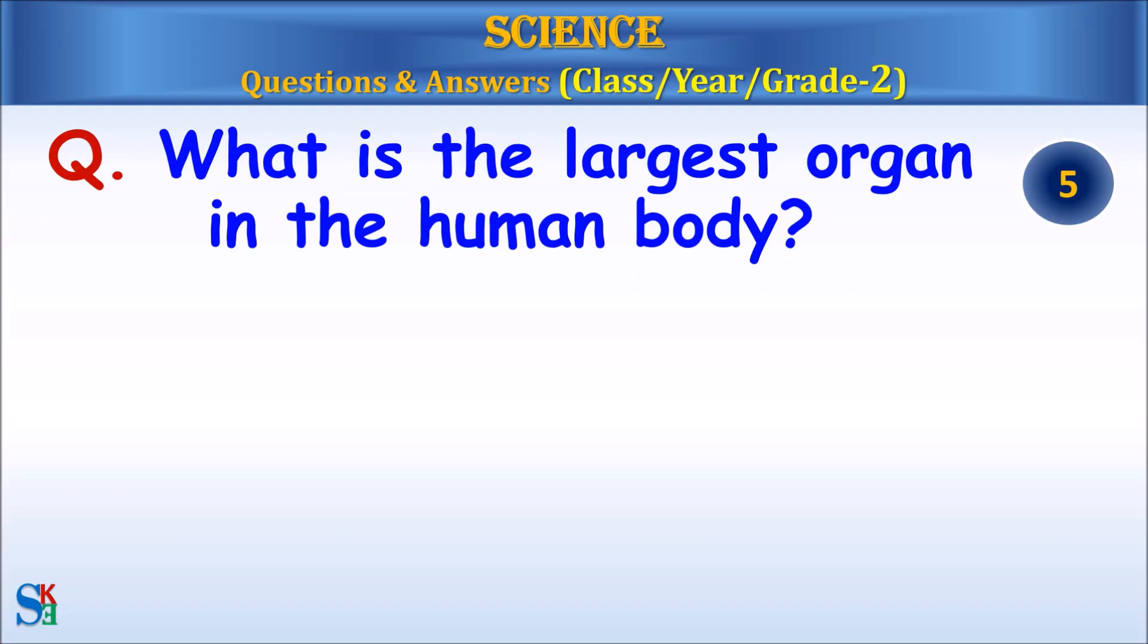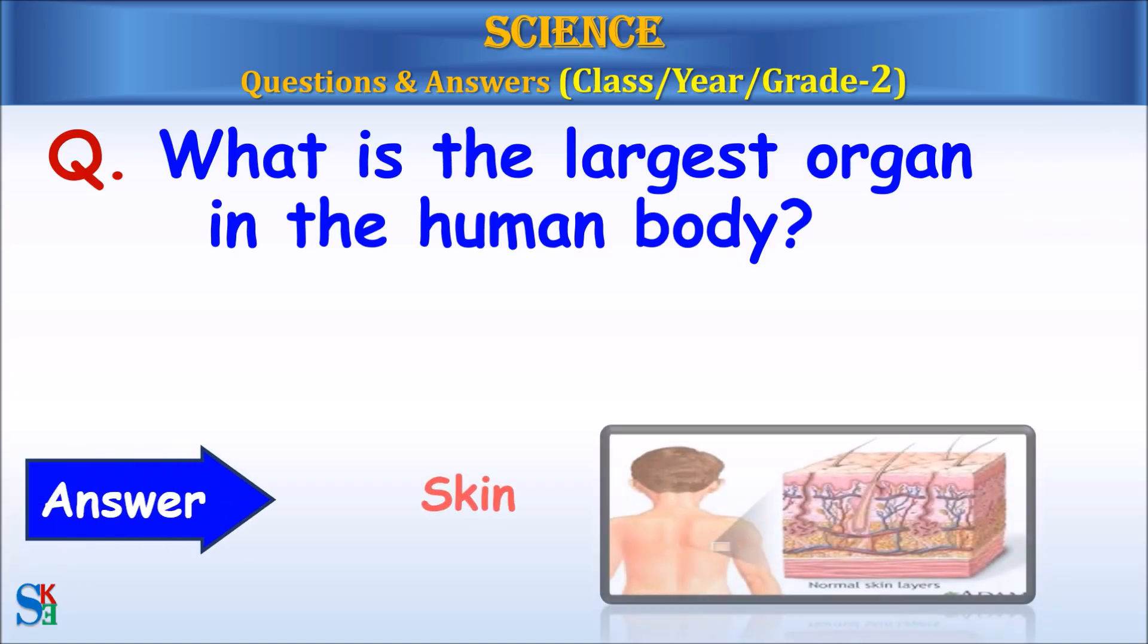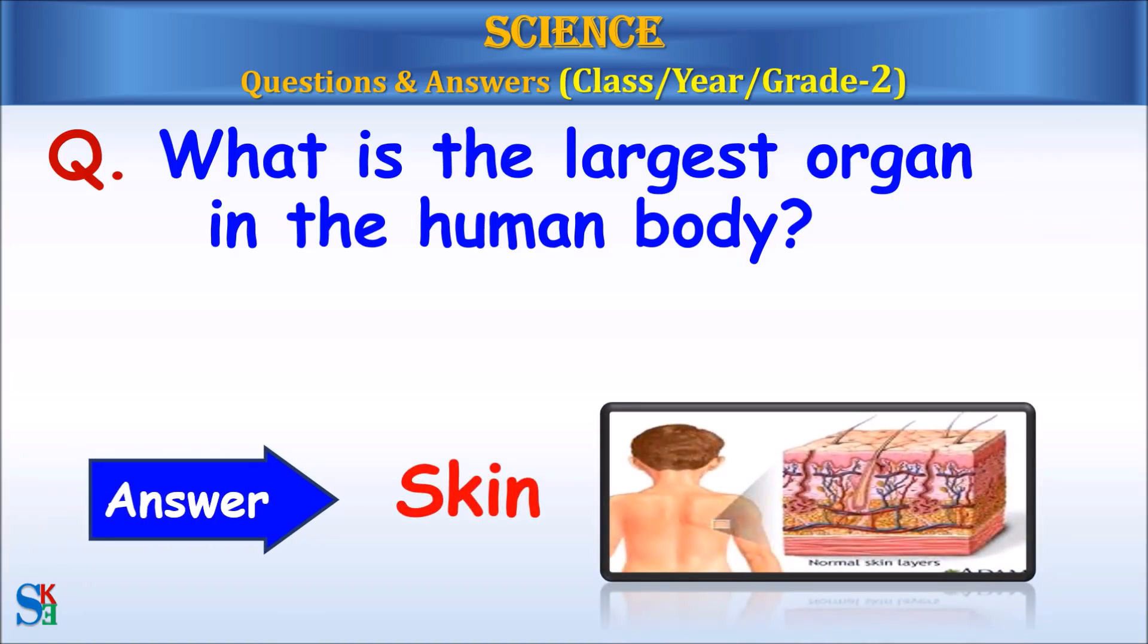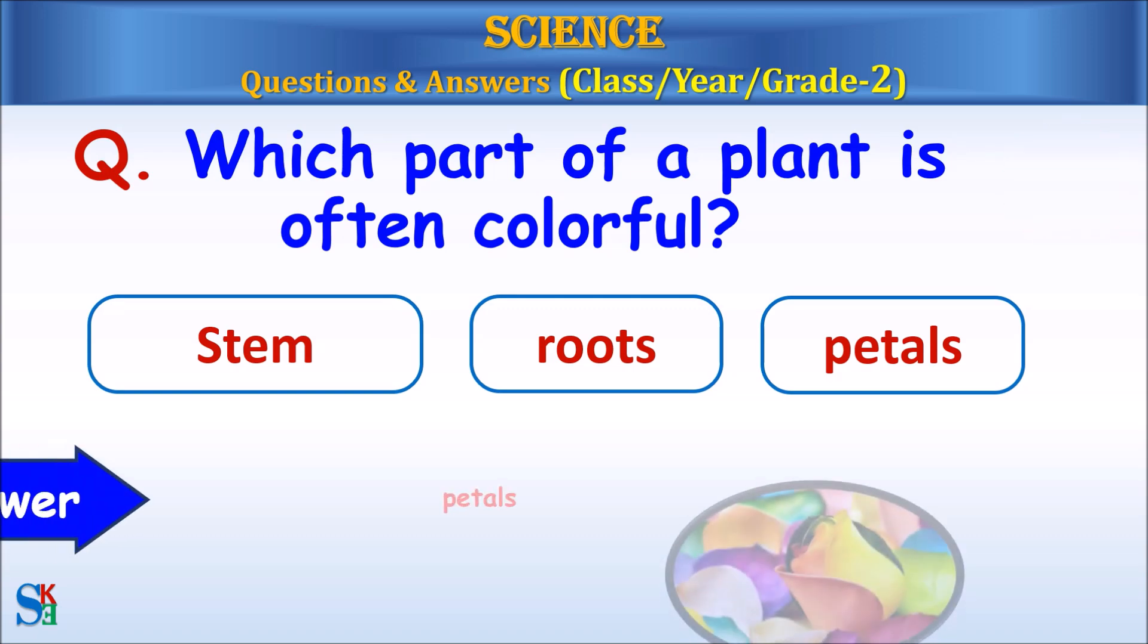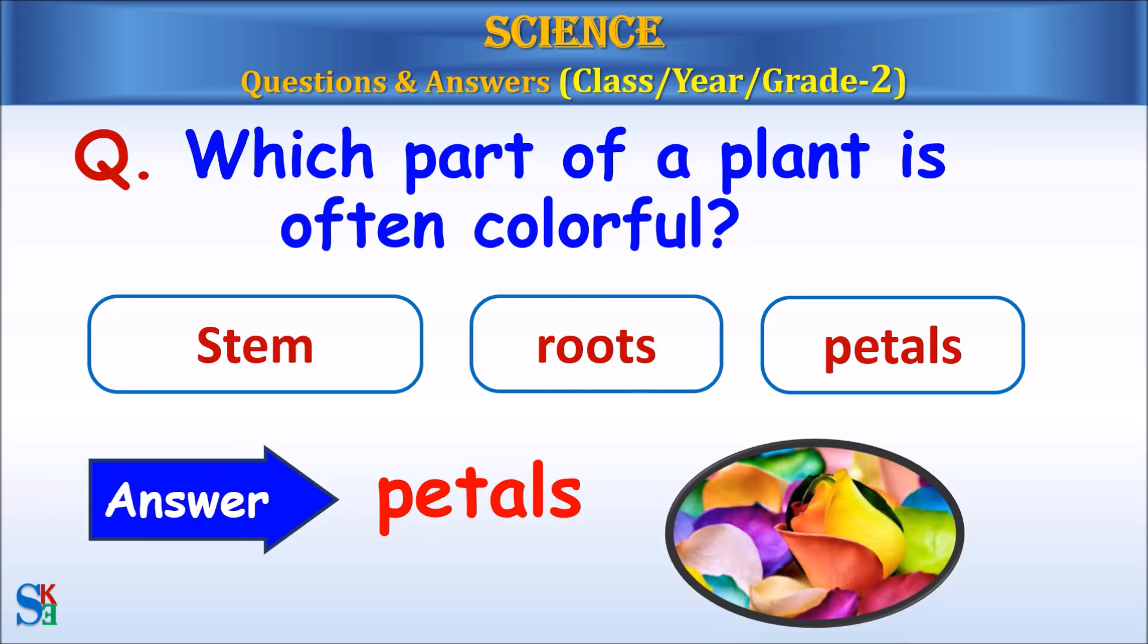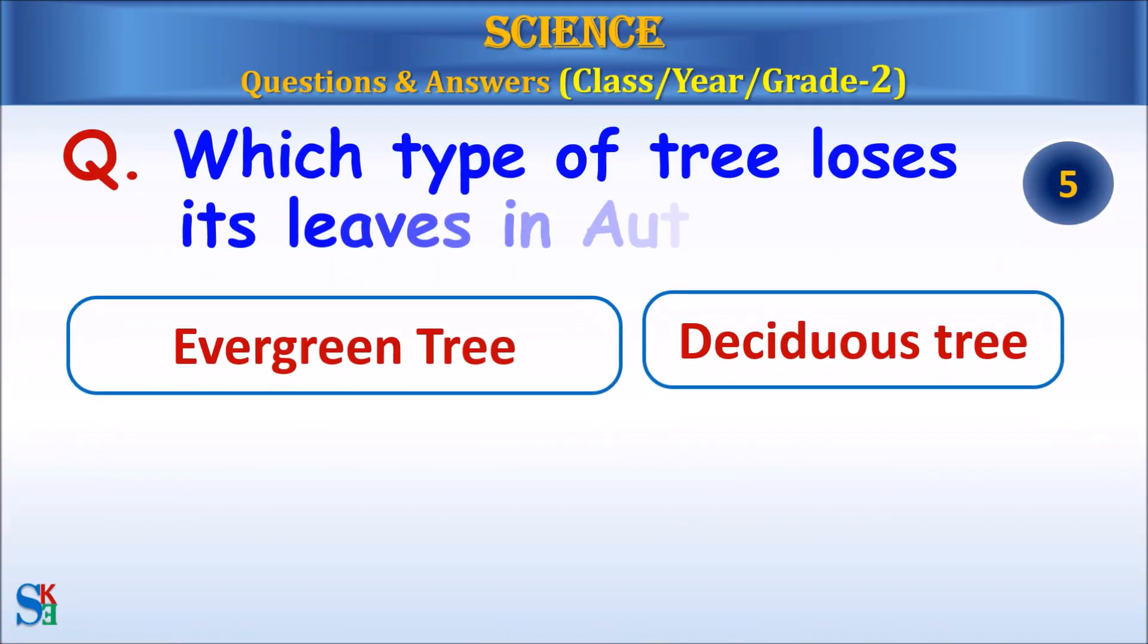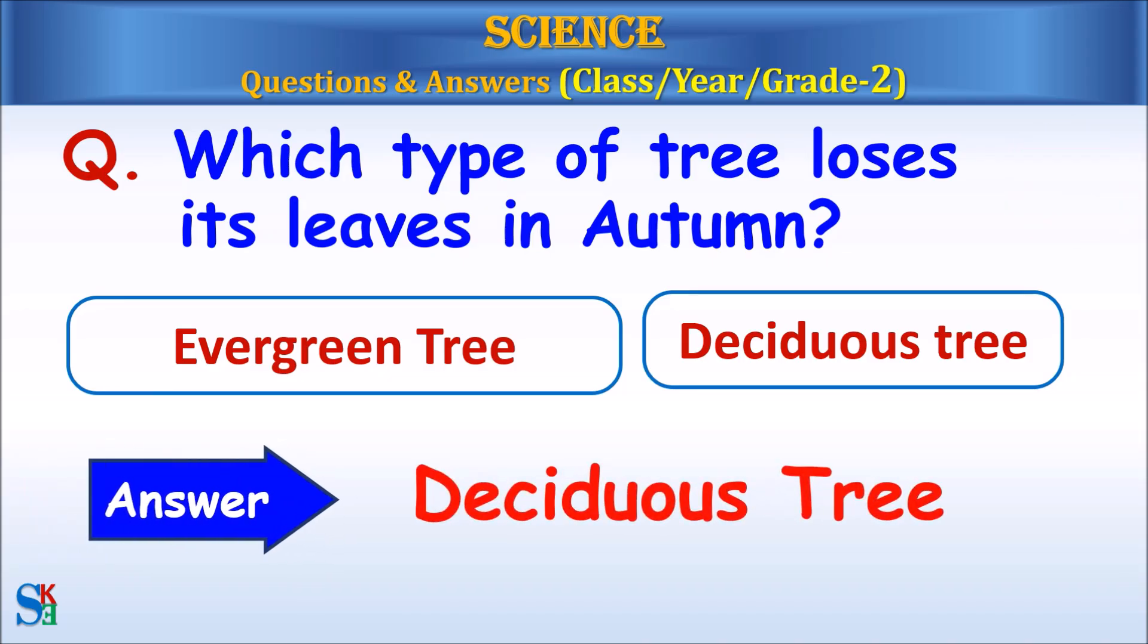What is the largest organ in the human body? Skin. Which part of a plant is often colourful? Stem, roots or petals? Answer, petals. Which type of tree loses its leaves in autumn? Evergreen tree or deciduous tree? Answer, deciduous tree.